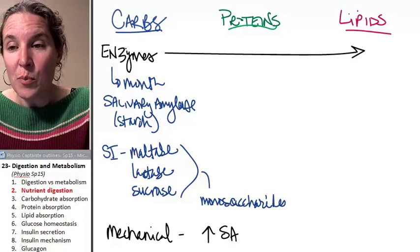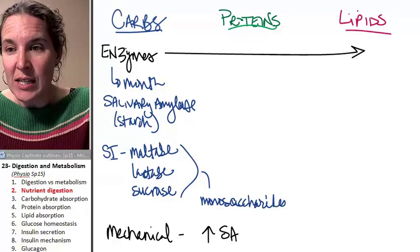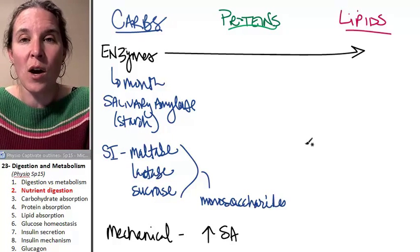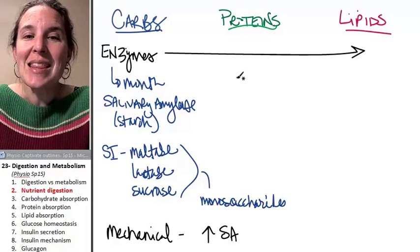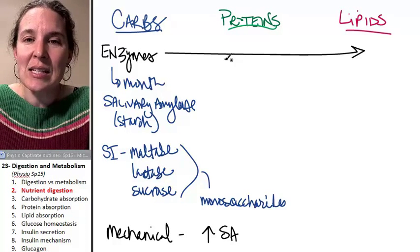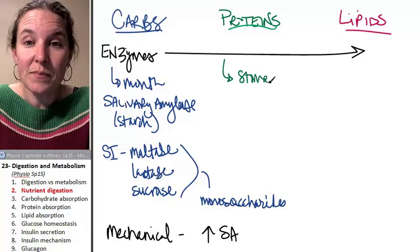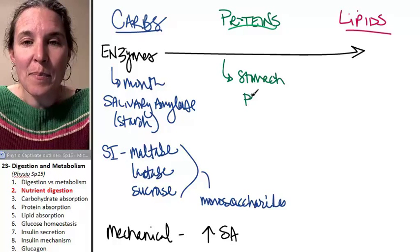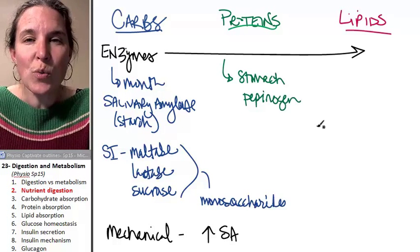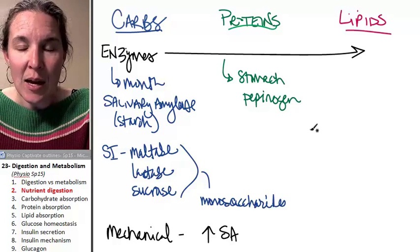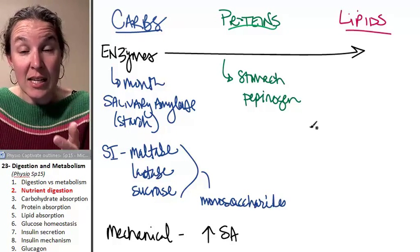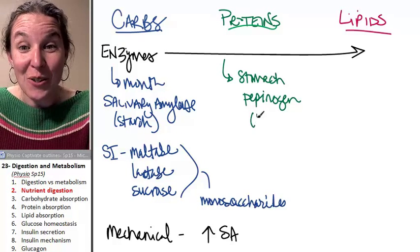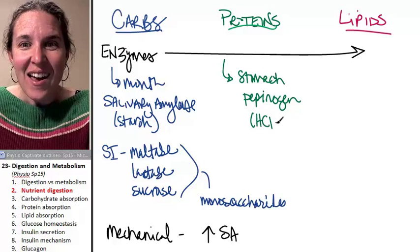Proteins - we have multiple proteases that are involved in protein digestion. Again, we can bust them up all we want, but we need the chemicals to break them down. This begins in the stomach. If you remember from anatomy, we had pepsinogen, which was a protein enzyme produced by cells in the stomach. Pepsinogen is activated by hydrochloric acid into pepsin.